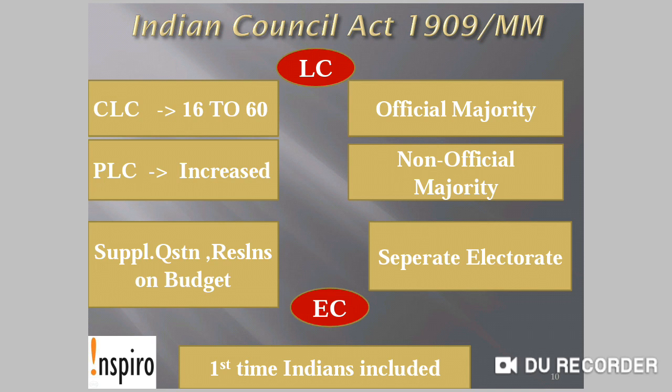The most important provision under the Indian Council Act 1909 was the separate electorate, also called communal electorate. Under separate electorate, a separate electorate was granted for the Muslim community, meaning Muslims could contest seats where only Muslims could participate in voting. Morley was the Secretary of State in London, and Lord Minto was the Viceroy in India at that time. Lord Minto is also known as the father of communal electorate in India.